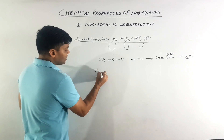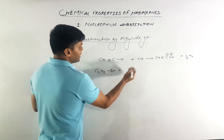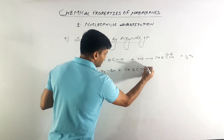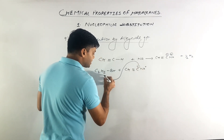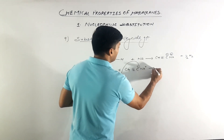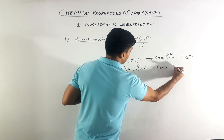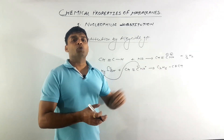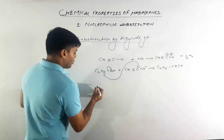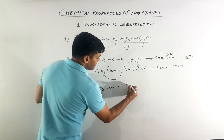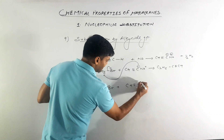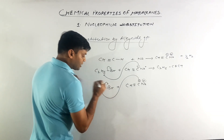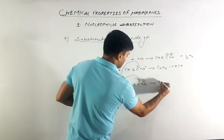The alkynide part acts as a nucleophile in the nucleophilic substitution reaction, substituting halogen atoms from alkyl halides. For example, when ethyl bromide (C₂H₅Br) is treated with sodium ethynide (HC≡C⁻Na⁺), this ethynide group being a strong nucleophile attacks the ethyl group through its negative charge, substitutes Br, and the product is C₂H₅C≡CH — but-1-yne. This confirms it is a step-up reaction. Similarly, if ethyl bromide is reacted with sodium propynide (CH₃C≡C⁻Na⁺), nitrogen attacks the methyl group substituting the halogen.